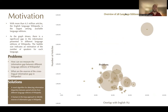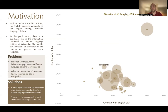Our project aims to address two problems: first, how can we measure the information gap between different language editions of Wikipedia, and what are the sources of cross-lingual information gap in Wikipedia? Our proposed approach comprises two solutions: a novel algorithm for detecting information disparities between paired articles from different language editions, and a human-in-the-loop approach to identify sources of information gap in Wikipedia.